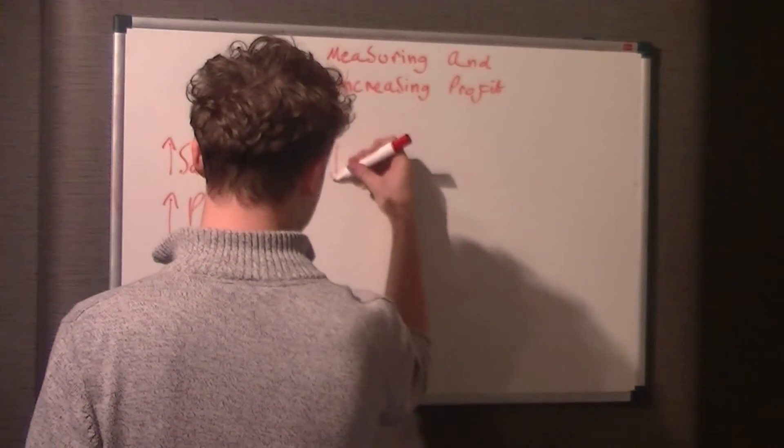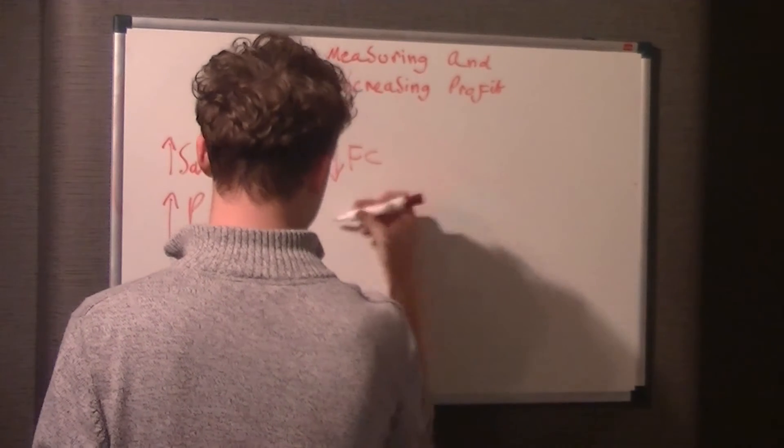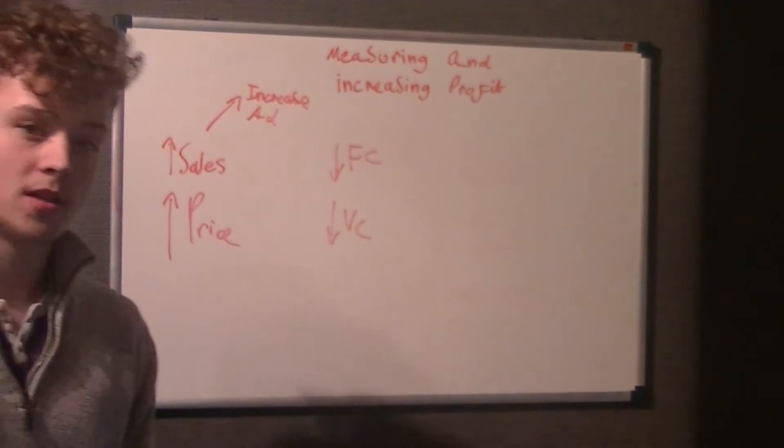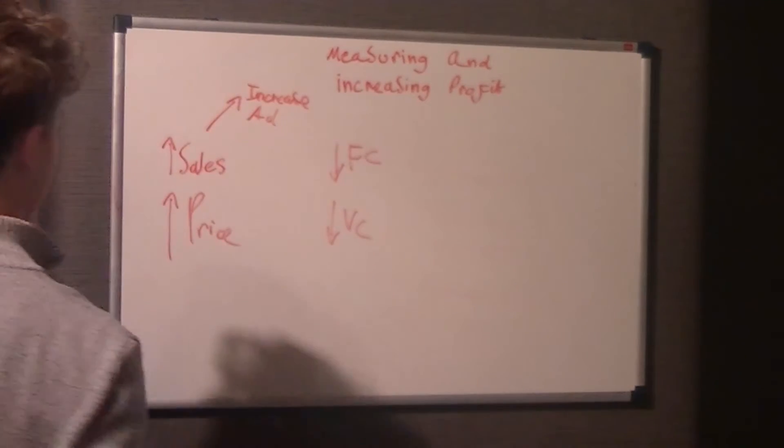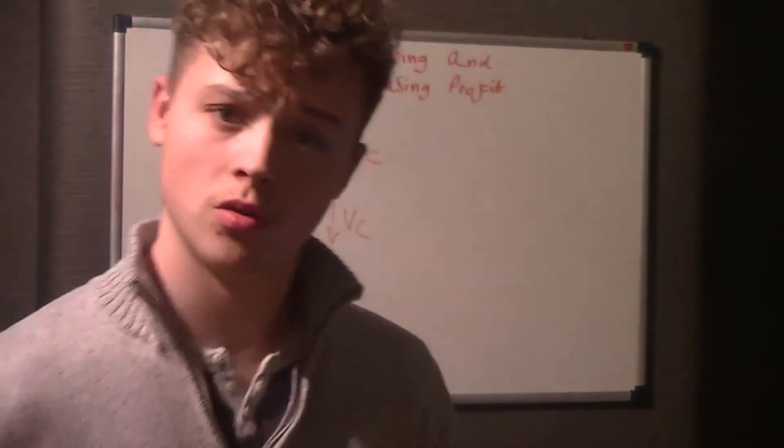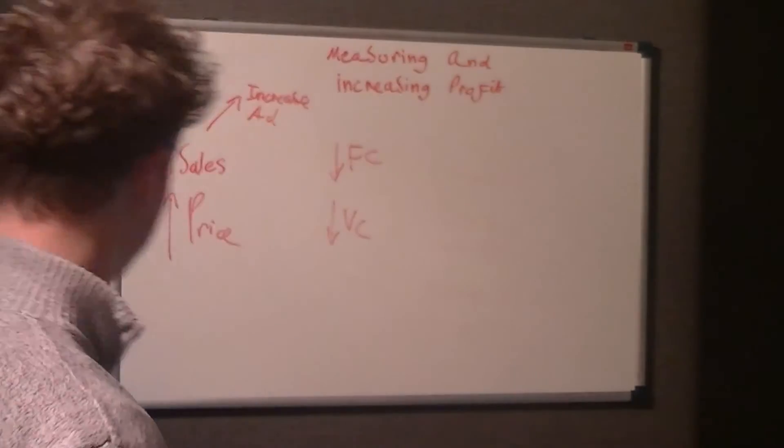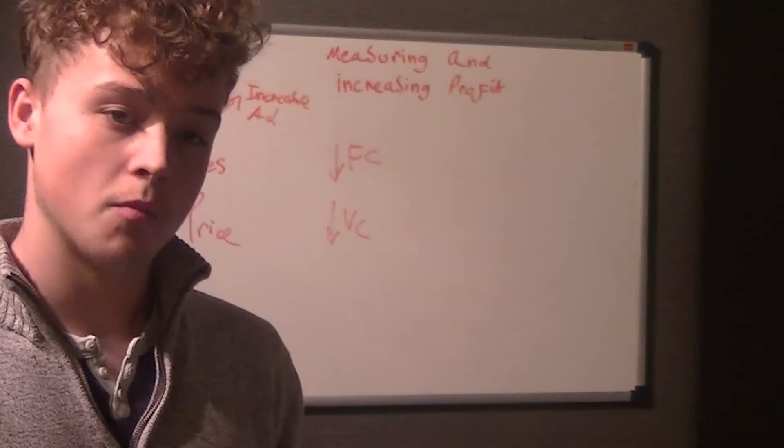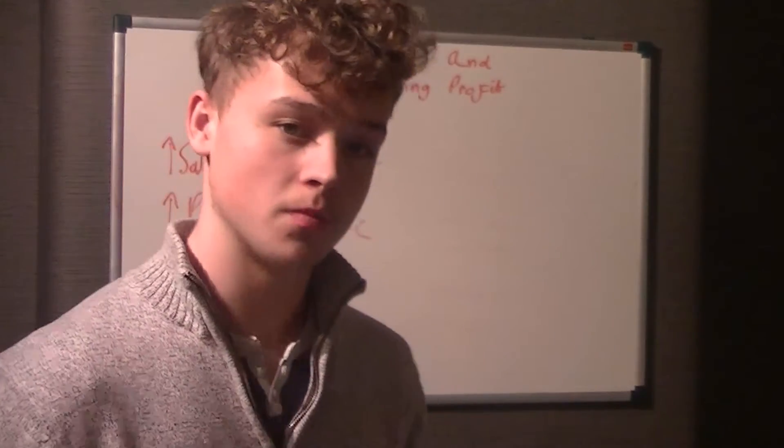You can decrease your fixed costs and you can decrease your variable costs. Now if you were a business, you could decrease your fixed costs. There's something I should have mentioned in an earlier video called rationalising. Rationalising is making their business smaller, but you've got to make sure the business does not need that capacity in the future.